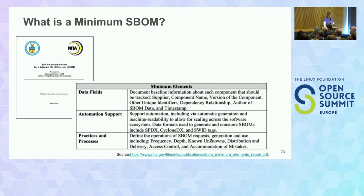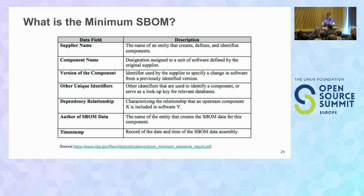Looking at the data fields and relationships, the minimum SBOM uses these types of fields, which are pretty standardly available. One thing the multi-stakeholder group wanted to see included — but got dropped — was a hash. Best practice in my mind is always to have a hash of your item so you know you're talking about the same thing and it hasn't changed out from under you. Both formats supply them; there was just some insecurity about how to do it.